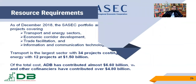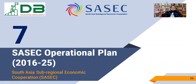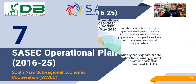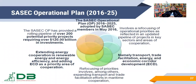So resources were determined and supplied. Now let us come to the plan — how this SASEC operational plan will be executed. The SASEC Operational Plan 2016 to 2025 was adopted by the SASEC member countries in May 2016. It involved a refocusing of operational priorities and reflects an upgraded pipeline of projects by key sectors and areas of cooperation.